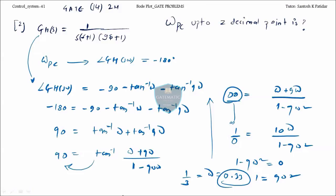1 by 3, that is my omega, and that is 0.33. This is my answer. Is it okay? So this is all about the GATE problems related to Bode plot.